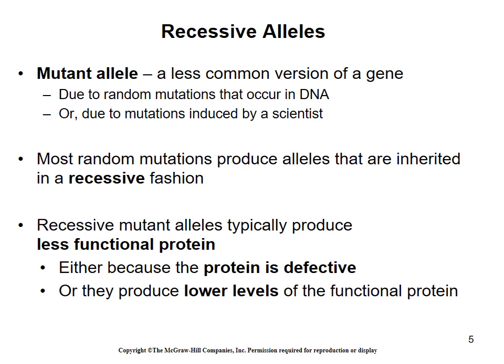Mutant alleles will often be inherited in a recessive format. In a diploid organism, if one inherited copy is recessive or mutated, it will affect the amount of protein the cells can generate — either lower than normal levels, or a completely defective protein, allowing a new phenotype to appear.